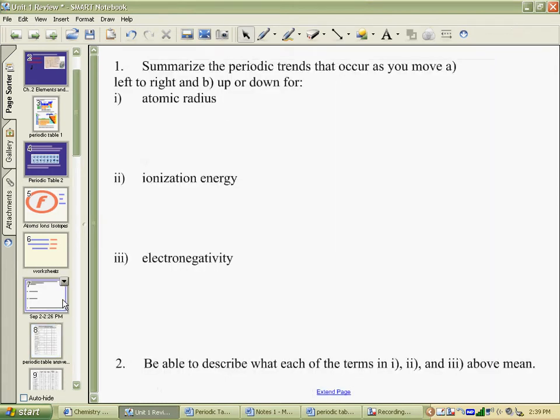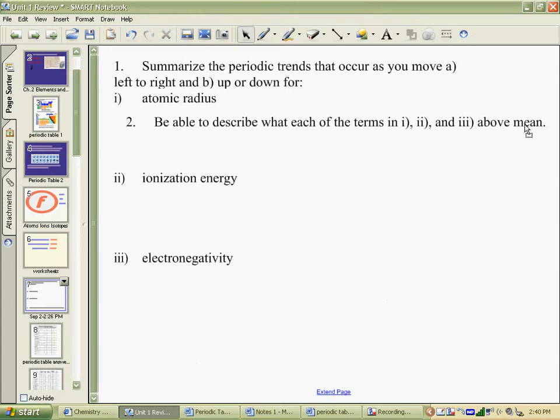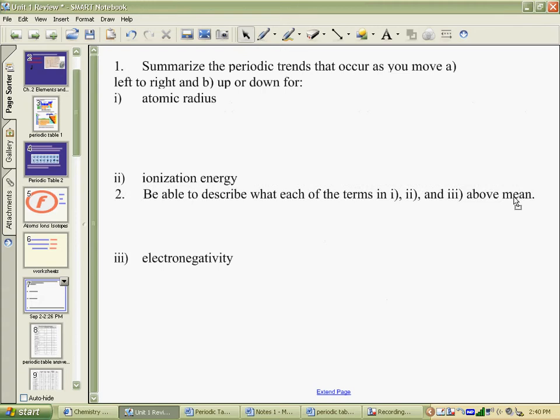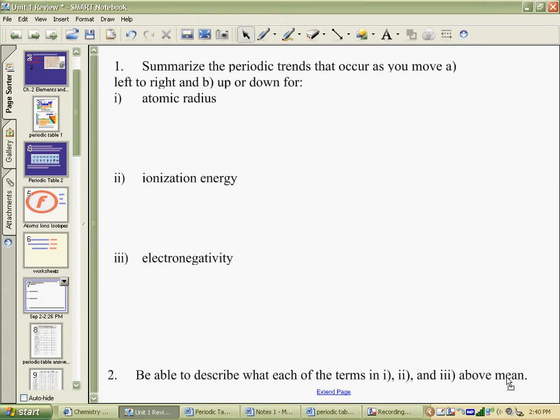The first question you were asked was to summarize the periodic trends that occur when you go either left to right or up and down for the atomic radius, the ionization energy, and the electronegativity. Then number two says make sure you could tell me what atomic radius is, ionization energy, and electronegativity.